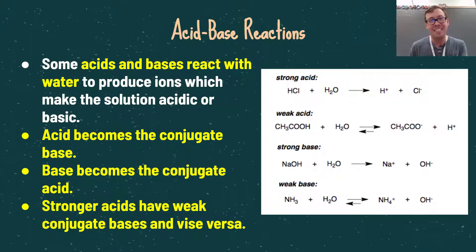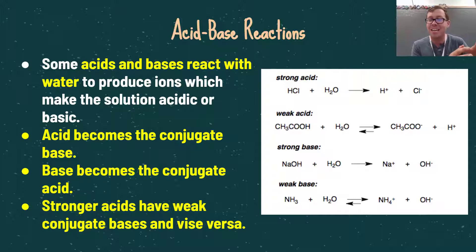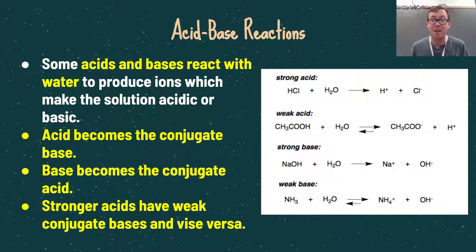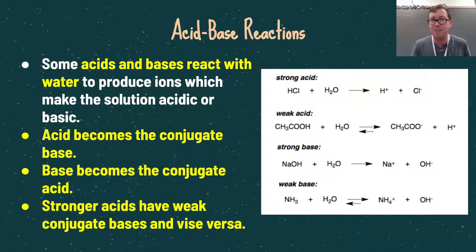The acid on your reactant side becomes your conjugate base on the product side. And your base on the reactant side becomes your conjugate acid on the other side of the equation. The strength of the conjugate acid or conjugate base is based on the original acid strength. If it is a strong acid, it will have a weak conjugate base. And if it is a weak base, it may have a strong conjugate acid.